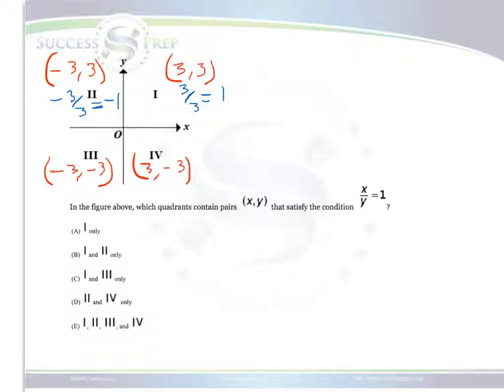In quadrant 3, x over y would be -3 over -3, which produces 1. In quadrant 4, x over y would be 3 over -3, which produces -1.